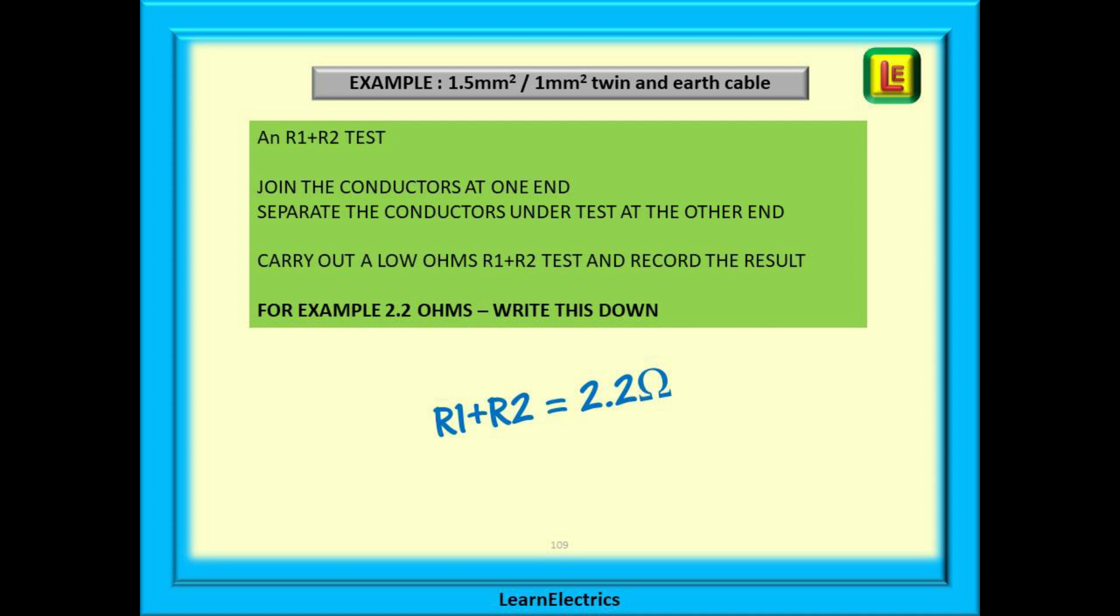R1, the phase wire, is 1.5mm, and R2, the earth wire or CPC, is 1mm.